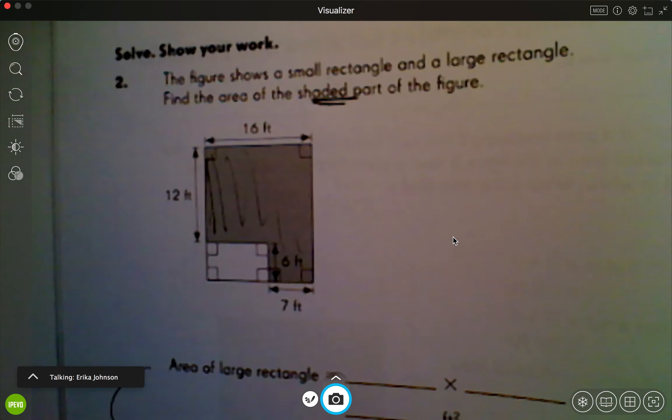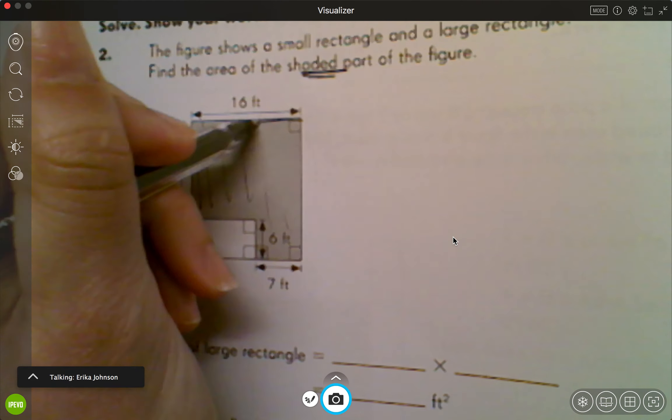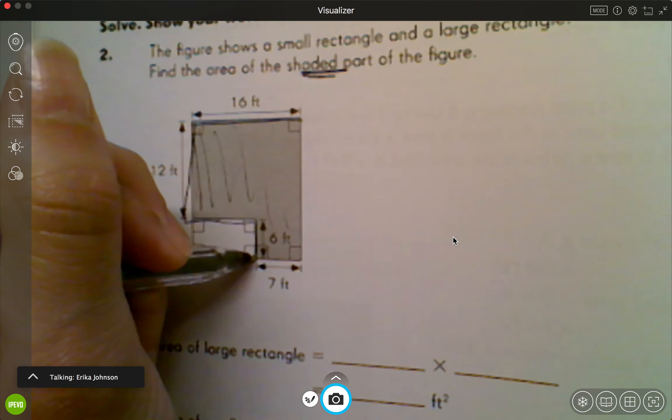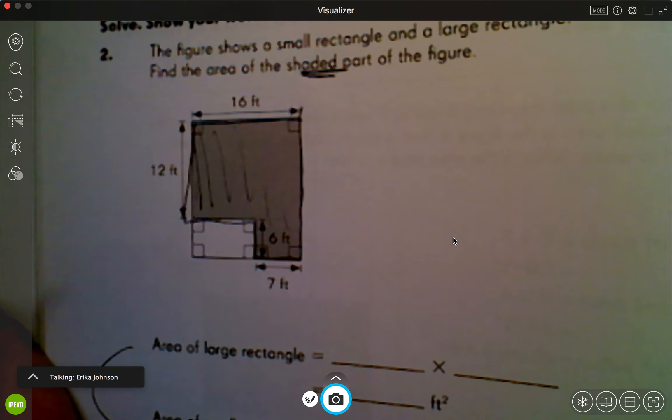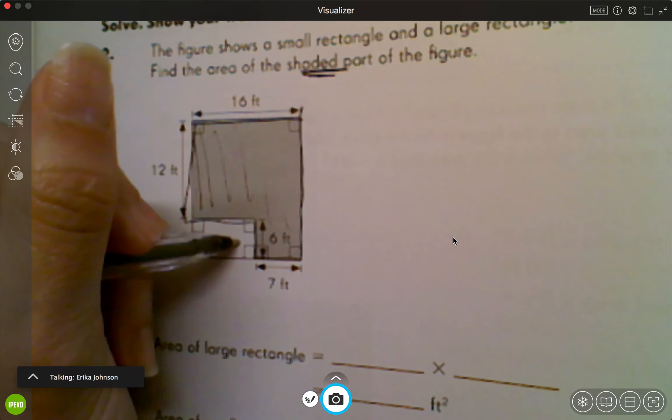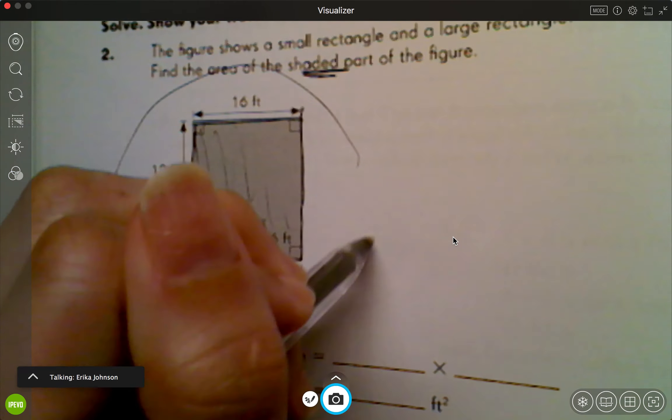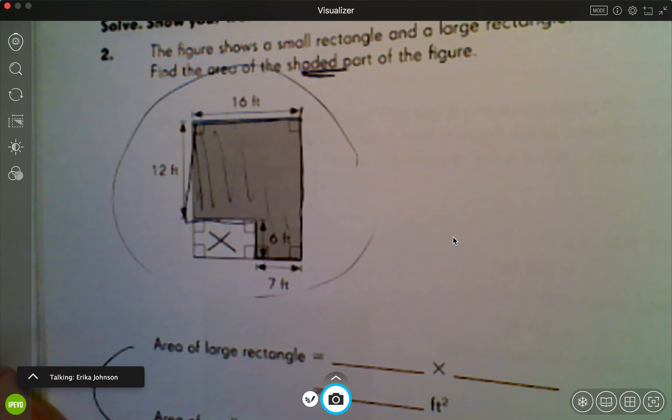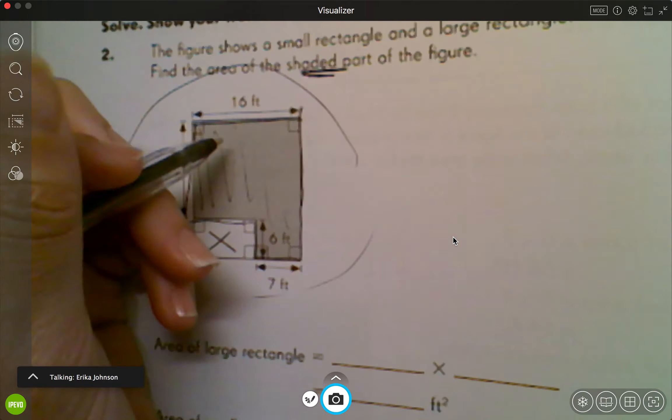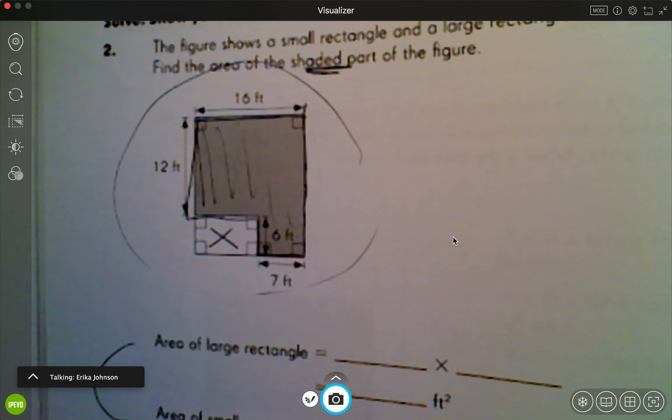Again, when I'm looking at this problem, if I want to find the area of this shaded part, it's kind of tricky because there's a piece of it that's been cut out. So what I always think is, can I find the area of the whole thing and then get rid of the little piece, and whatever's left is going to be the area of that.